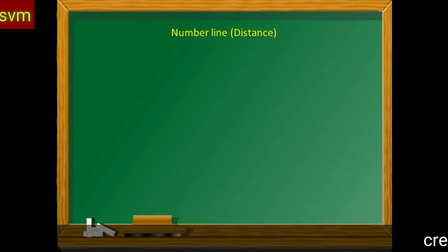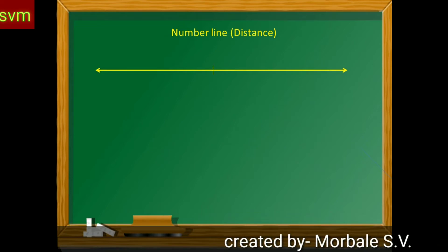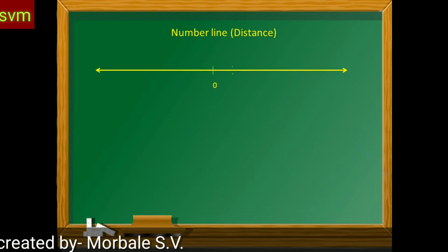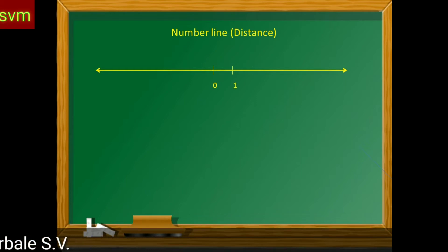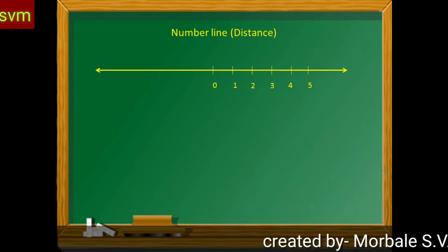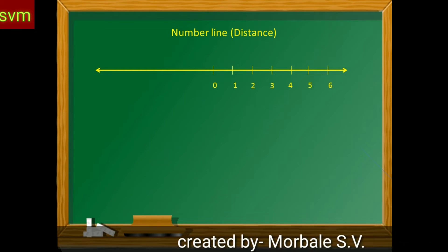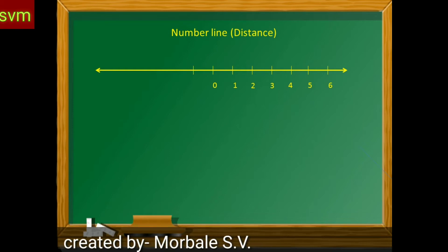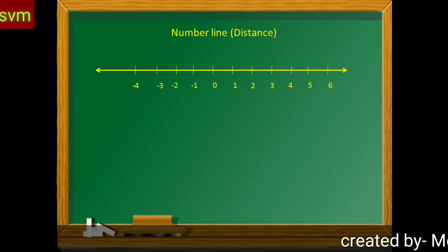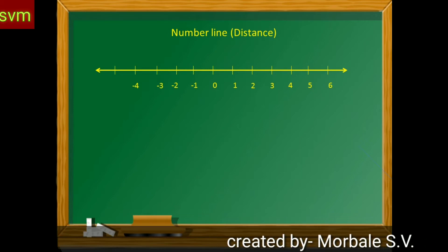Number lines. See the number lines — this is the number line. On the right-hand side: plus 1, plus 2, plus 3, plus 4, plus 5, plus 6. On the left-hand side: minus 1, minus 2, minus 3, minus 4. This is the number line.